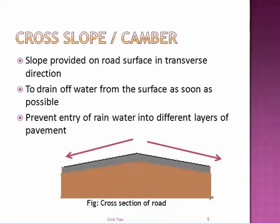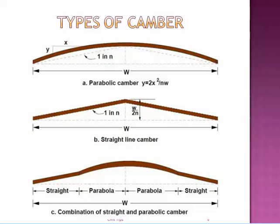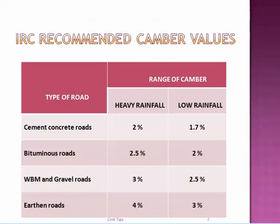By draining water quickly, entry of water into the pavement layers is prevented and all the underlying pavement layers are protected. In the figure we can see two arrow marks showing the camber direction. There are three types: the first is parabolic camber — in a parabolic shape; the second is straight-line camber, where the middle point and edges are connected by a straight line. These two are not usually used because of some disadvantages, so we use a combination of parabolic and straight camber in practical purposes.